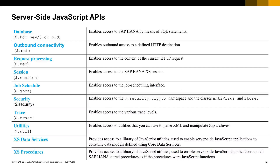Here are a few examples of operations we could do using JavaScript: executing SQL statements, making HTTP calls, and scheduling jobs on top of SAP HANA.